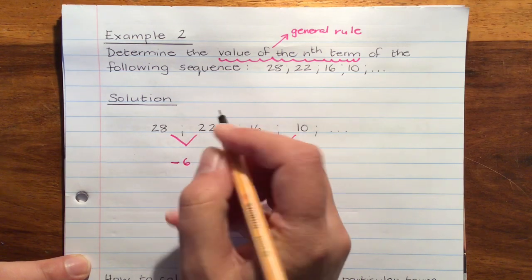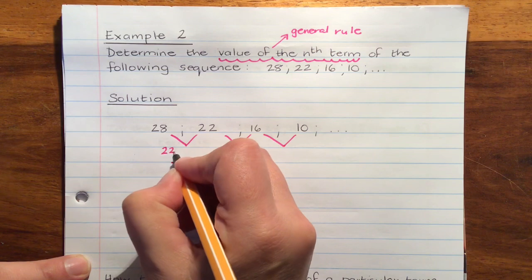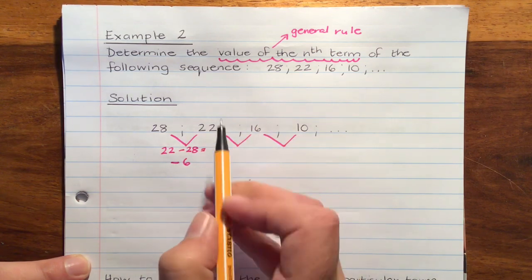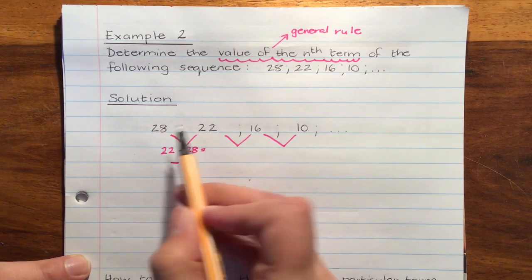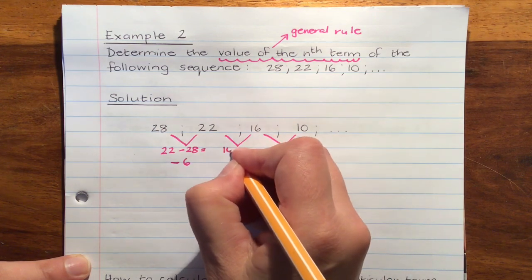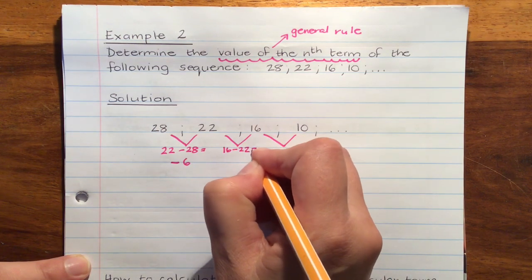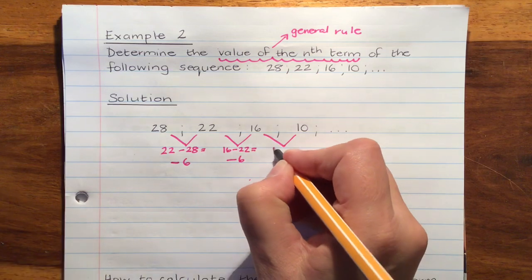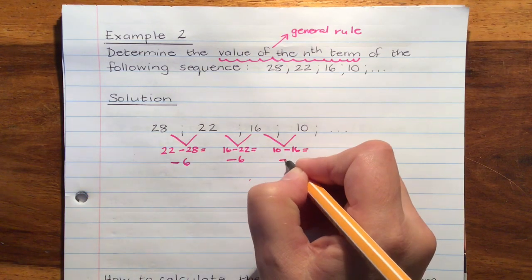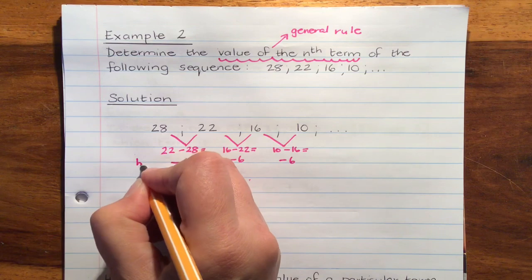That's because we are really saying 22 minus 28. The term, subtract the one before it to get the common difference. 16 minus 22 is negative 6, and 10 minus 16 is also negative 6. So that's our B value.